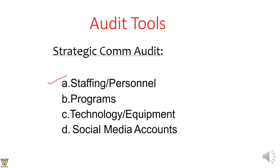Audit tools — we have the strategic communication audit tools involving staffing or personnel. Employees are the crux of the matter. We look at programs — why and how we are communicating with them. Technology and equipment can include verbal communication face-to-face, via mobile, or via voice-operated internet protocol. There is also informal media and social media accounts; many companies are now having formal communication over social media, taking precedence over email. People might communicate over an official WhatsApp group.